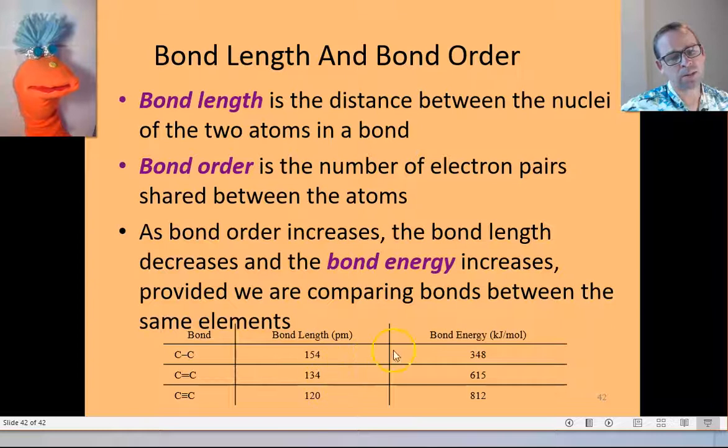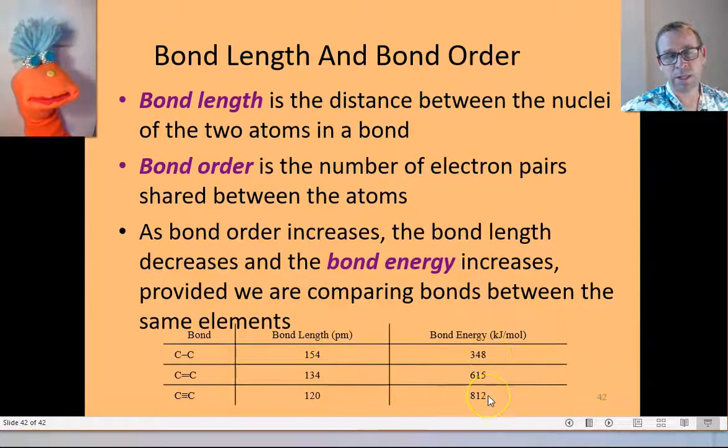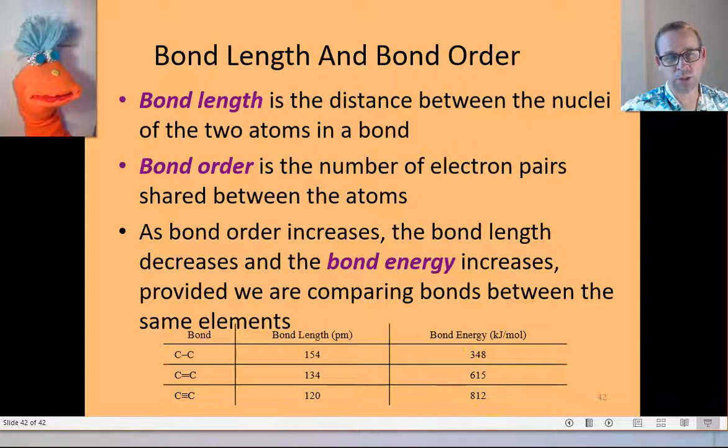Look at the bond lengths and the bond energy. As the bond goes from single double to bond order of 3, our bond length decreases, and our energy, or the energy necessary to break that bond, the dissociation energy, increases.